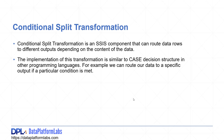Conditional Split Transformation is an SSIS component that can actually route data rows to different outputs based on the content of the data. The implementation of this transformation is very similar to the case decision structure in other programming languages. For example, we can route our data to a specific output if a particular condition is met, and if another condition is met, then we can route our data to a different output.